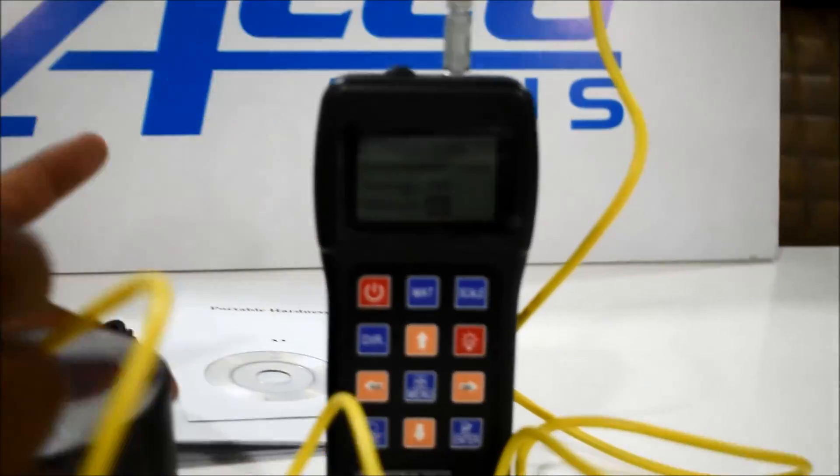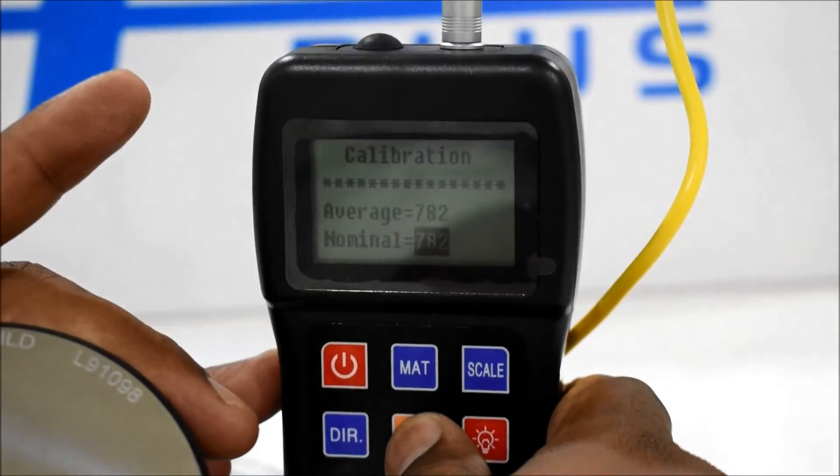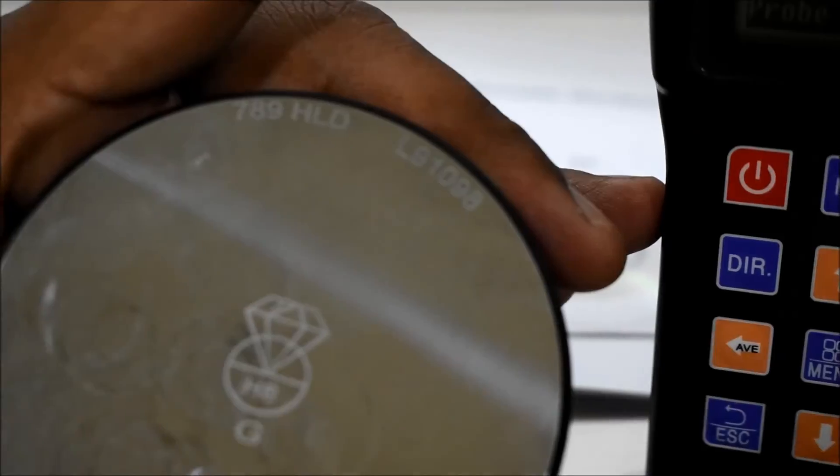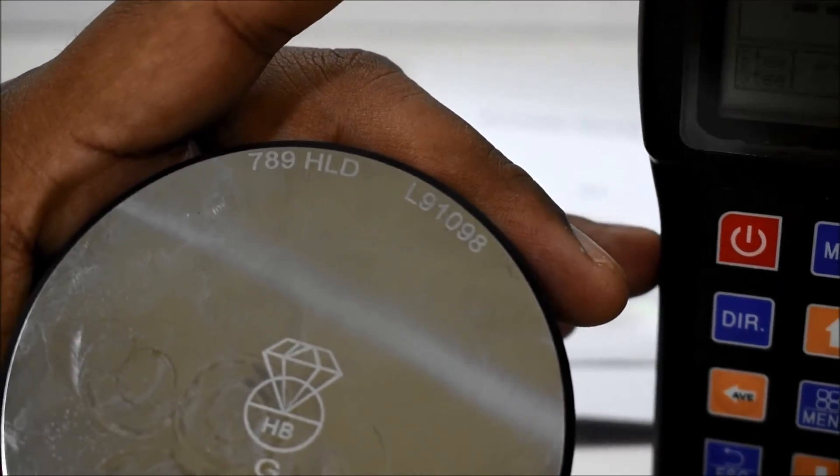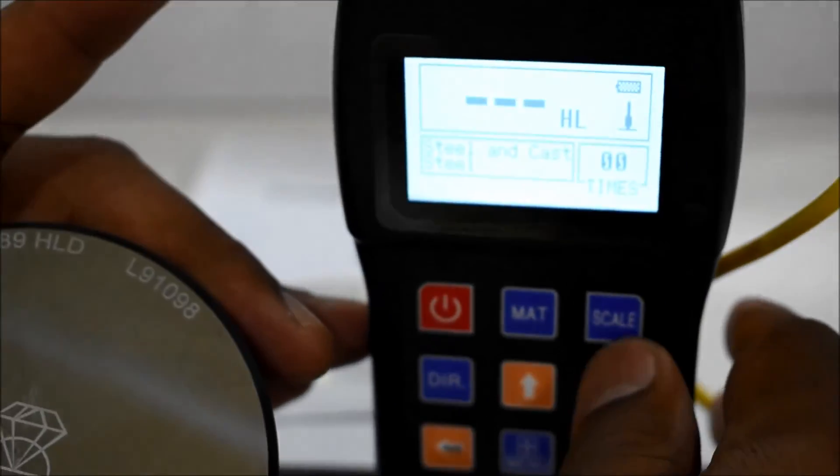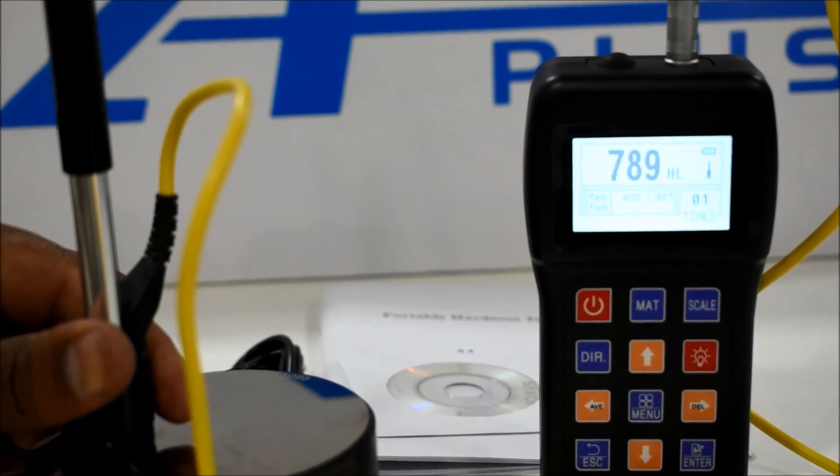Then you can get the average reading of 782. If you want to normalize by 789 to calibrate this instrument, you can do the reading. Done.